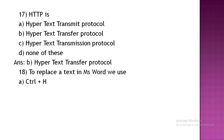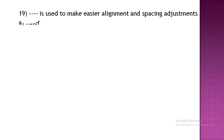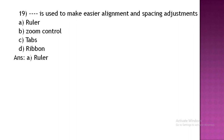To replace text in MS Word, we use a shortcut. Option A: Ctrl+H. Option B: Ctrl+J. Option C: Ctrl+G. Option D: Ctrl+W. The correct answer is Ctrl+H.